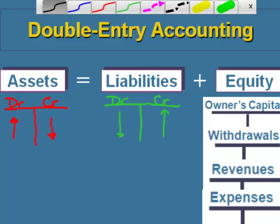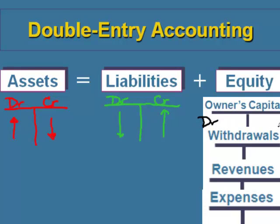When we look at accounts under owner's equity, the capital account follows the same T-account rules — debits are always on the left, credits are always on the right. But for capital, debits make the capital account go down and credits make it go up. For withdrawals, debits are on the left and credits are on the right, but debits make the withdrawals account go up and credits make it go down.